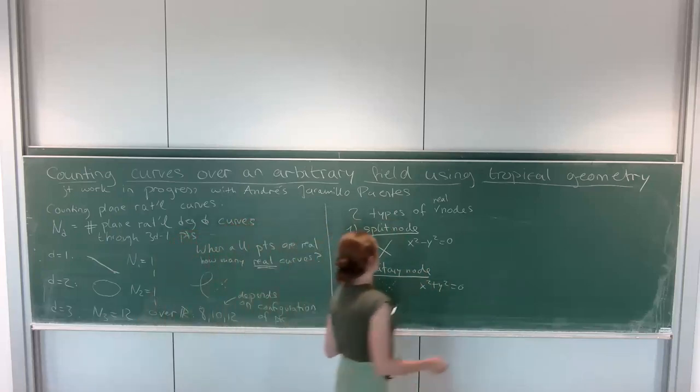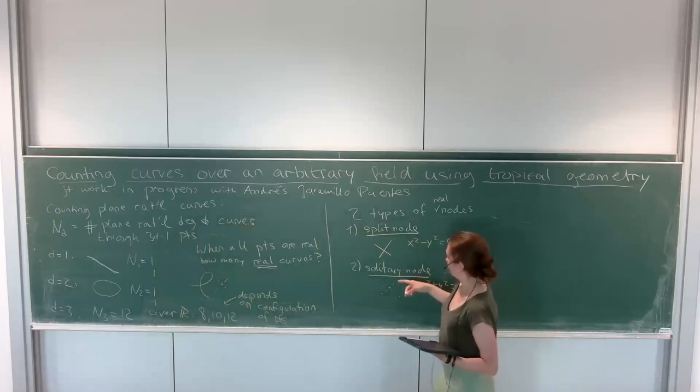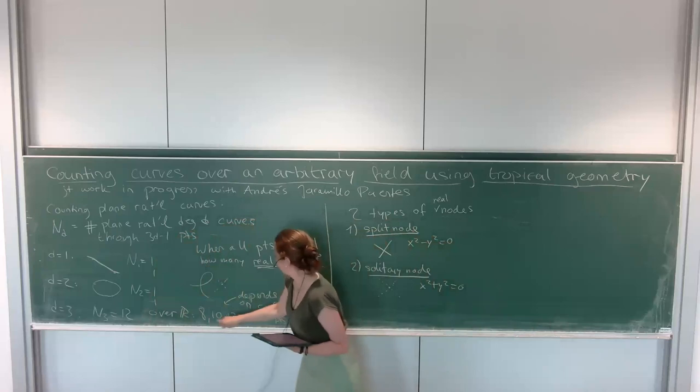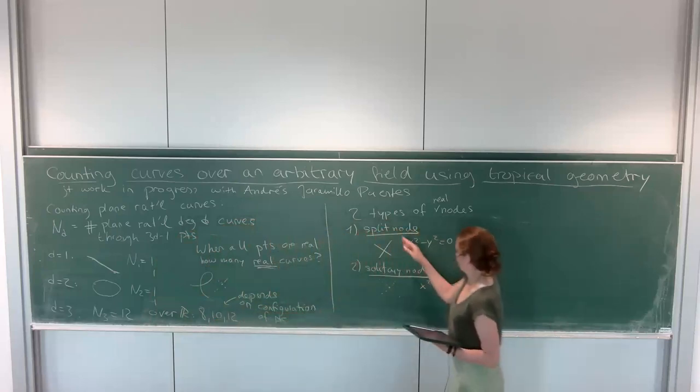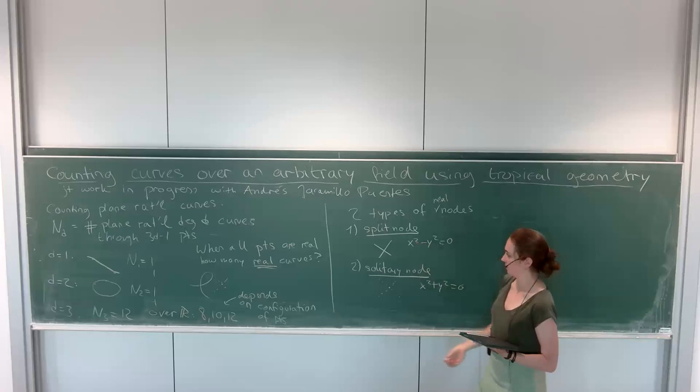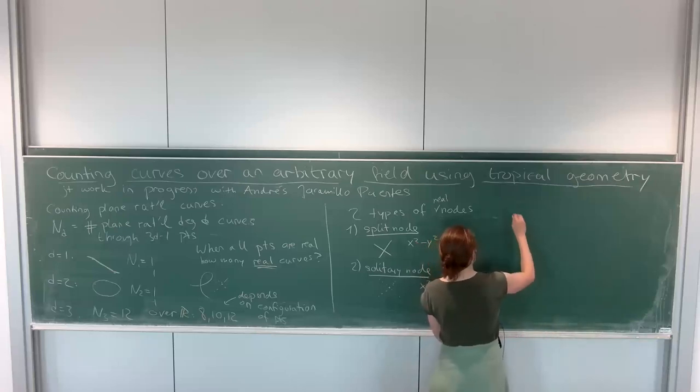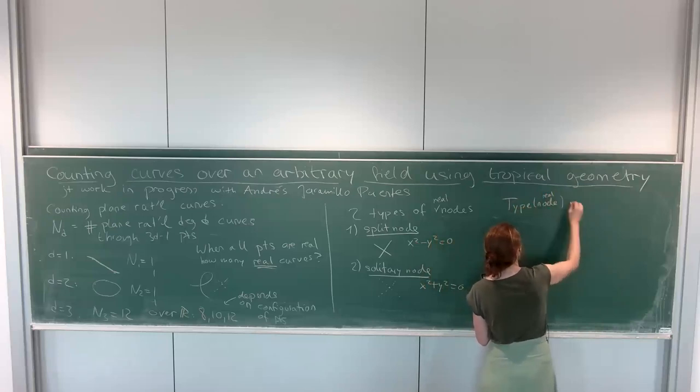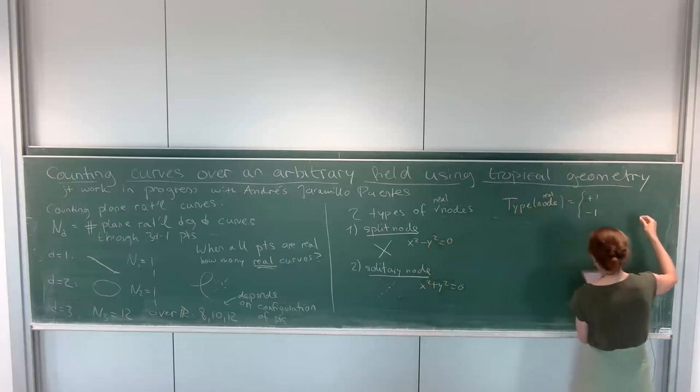It factors as x plus y. Or the solitary node. And this is given by x squared plus y squared equals 0. So it has one real point at 0, but the branches are defined over the complex numbers and are complex conjugate.